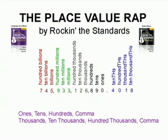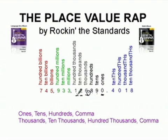Ones, tens, and hundreds — comma — thousands, ten thousands, hundred thousands. This is the chorus of the song, and we go through each of the place values naming them in order, starting right here at the ones place. The song sings ones, tens, hundreds, and then it says comma for that comma right there, then thousands, ten thousands, hundred thousands.